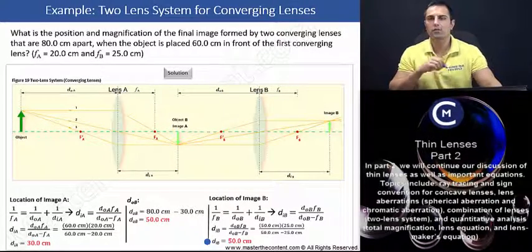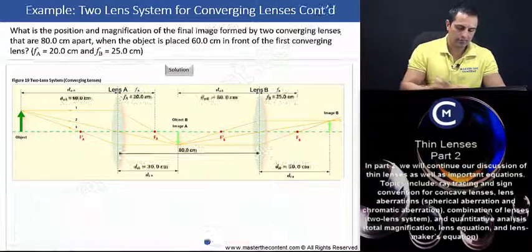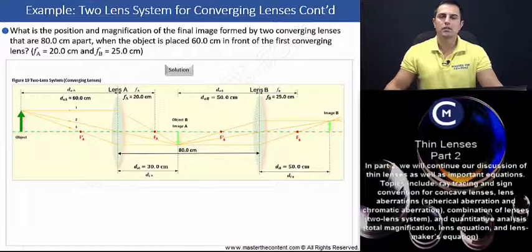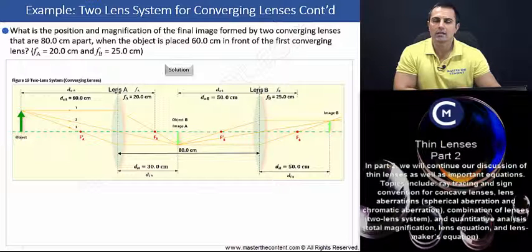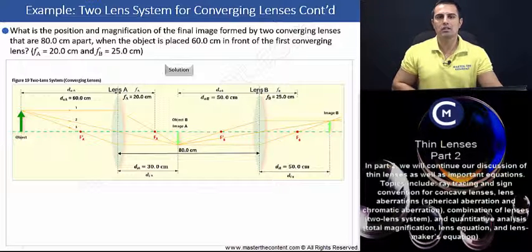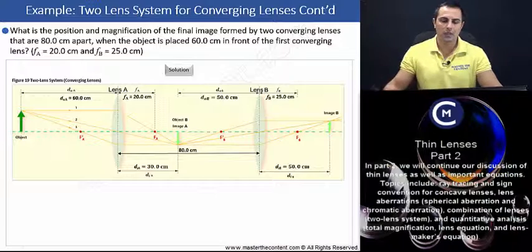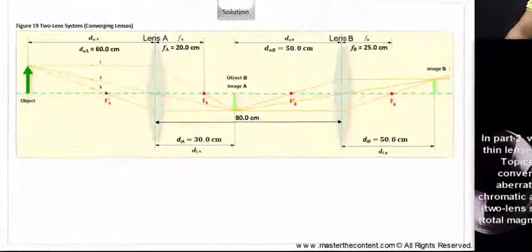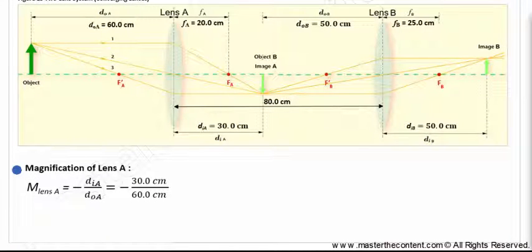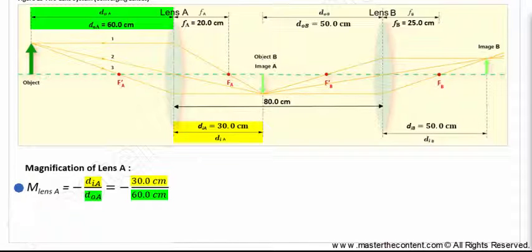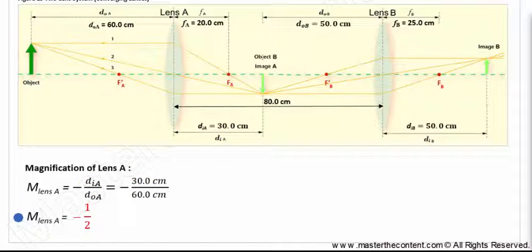Let's proceed to find the total magnification of the system. The total magnification is the product of the magnification produced by each lens. We'll first find the magnification of lens A and lens B, then determine the total magnification. Beginning with the magnification equation for lens A, the image distance is 30 centimeters and the object distance is 60 centimeters. Upon solving, we find the image produced by lens A is one half the original size. The negative sign tells us the image is inverted.